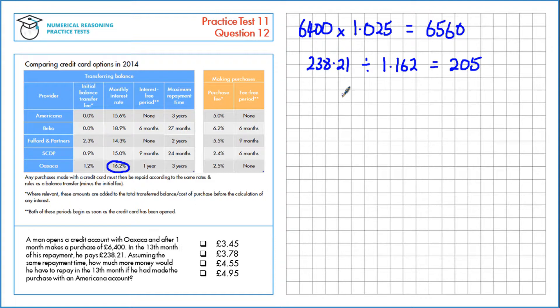If we divide this initial value, £6,560, divided by the repayment per month, we get 32 months. That's how long the repayment's over. And we need to know that for the next part of the question.